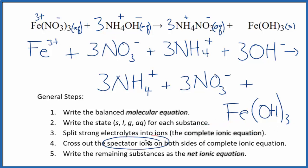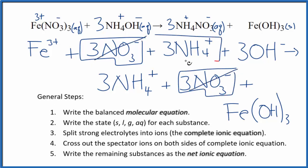Now we can cross out spectator ions. They're on both sides of that complete ionic equation. So in the reactants here, I see I have three nitrates right here. And in the products here, I see I have three nitrate ions. Those are spectator ions. We'll cross those out. In the reactants, I have three ammonium ions. And again in the products, spectator ions. Let's cross them out.